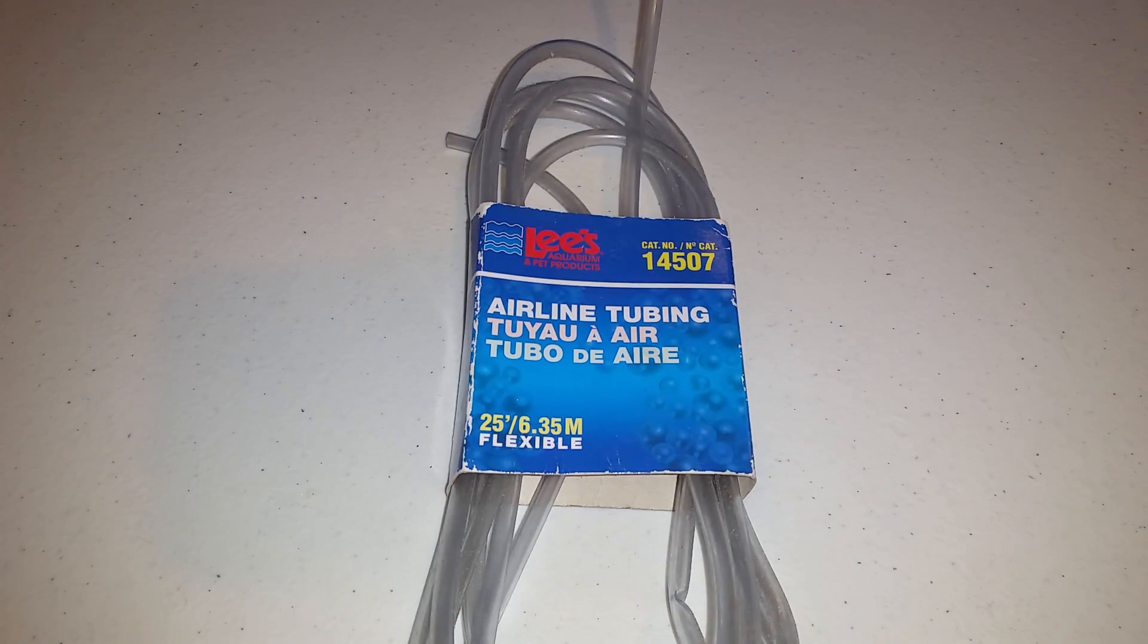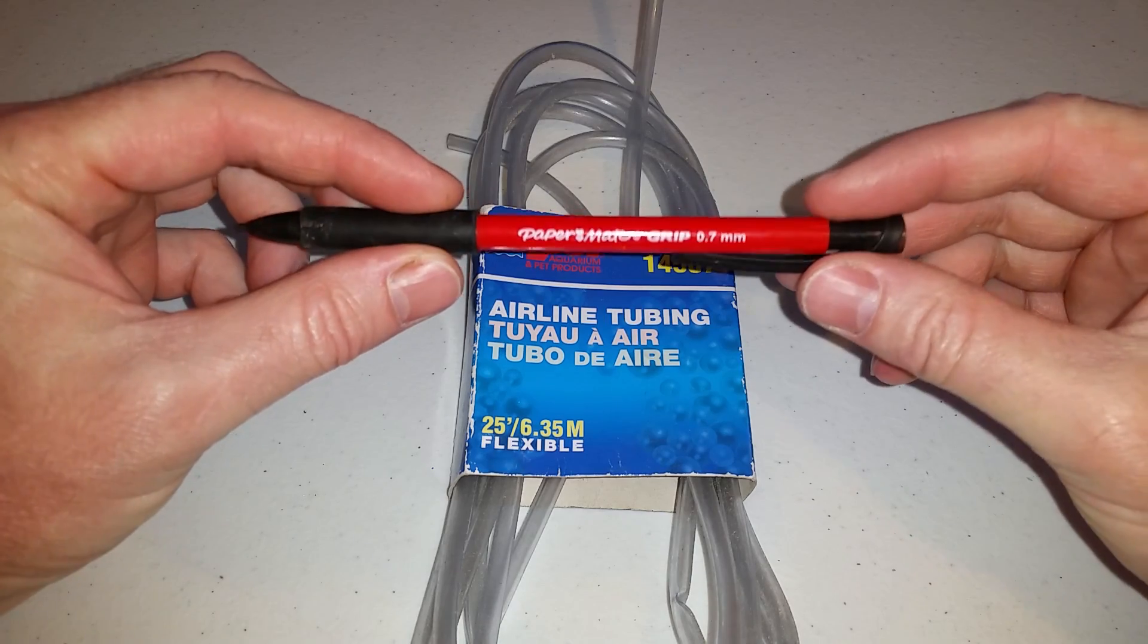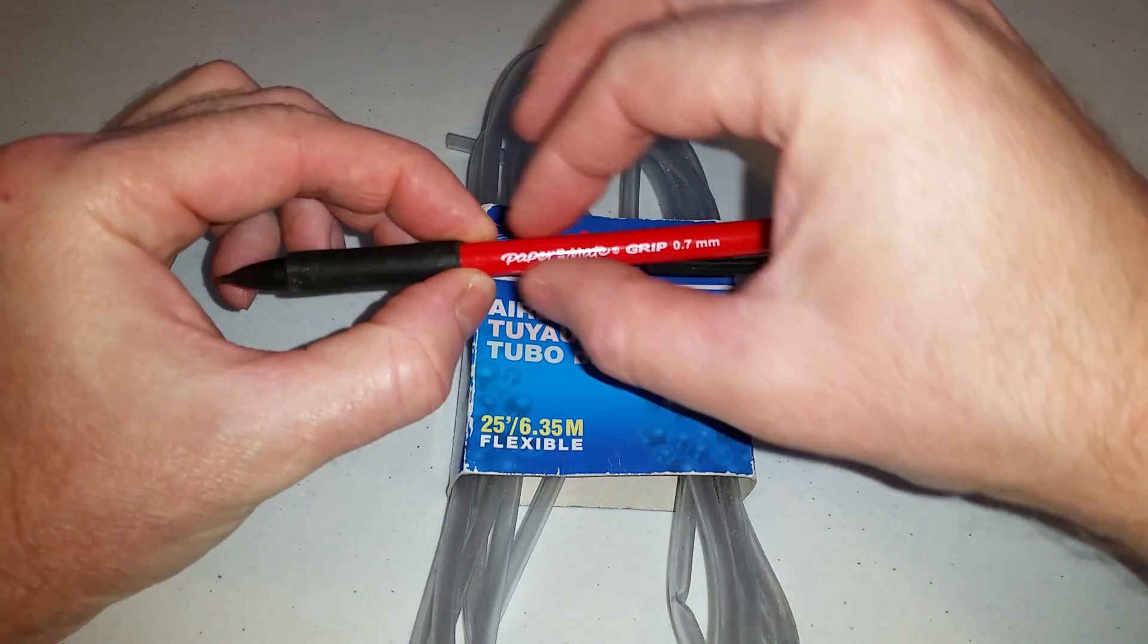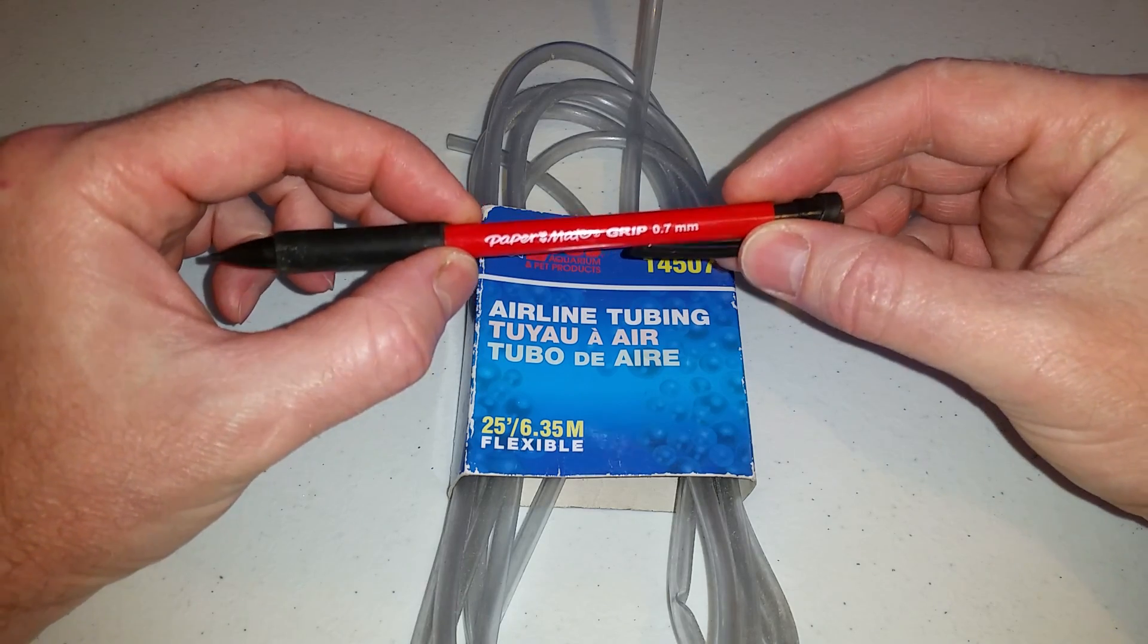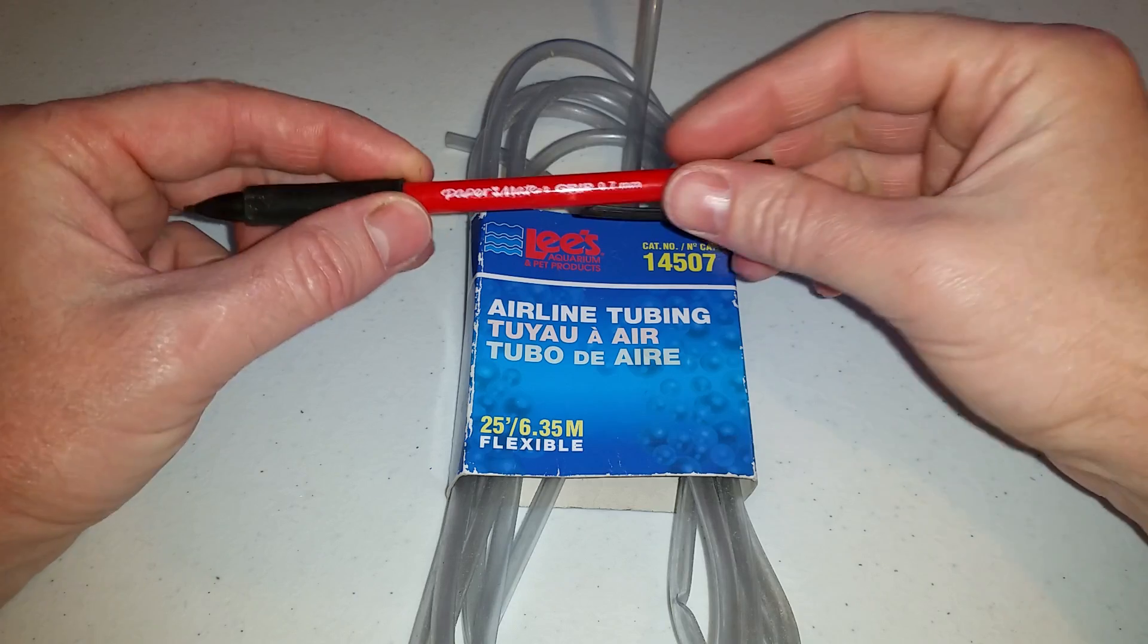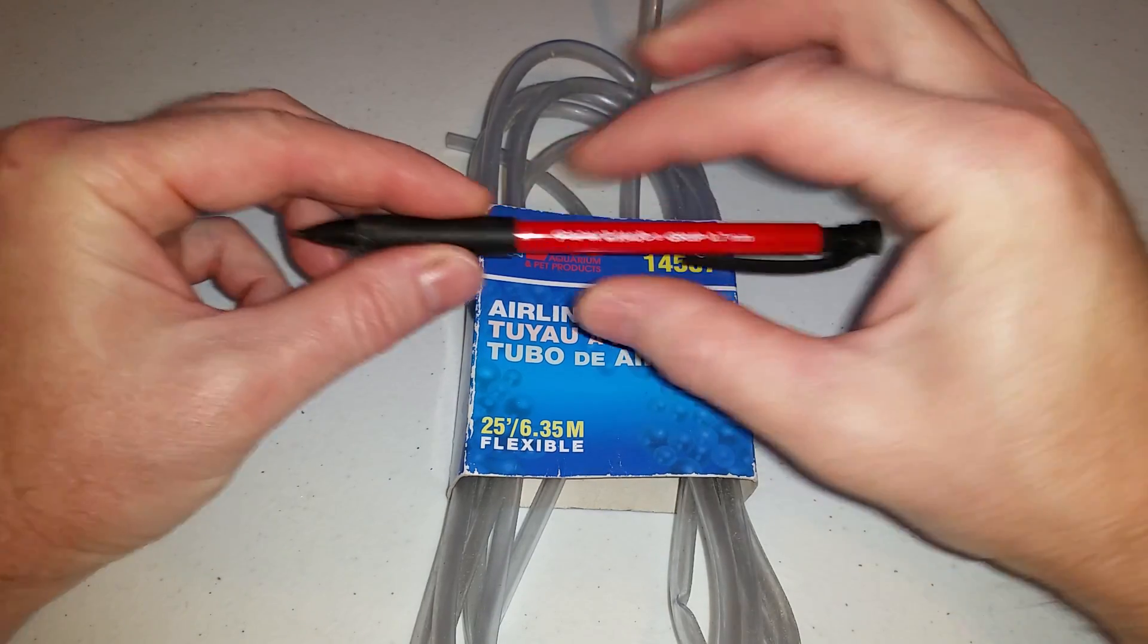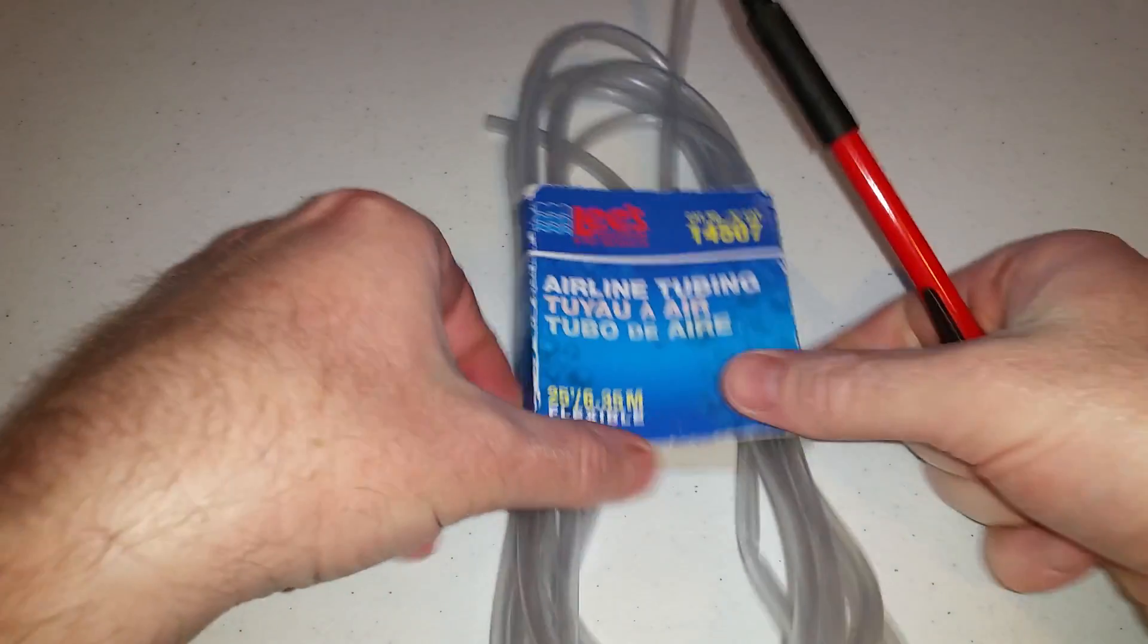The items you'll need is some fish tank airline tubing or maybe an old pencil or pen with plastic tubing that you can cut. An old Bic pen that you can get from the dollar store like 10 for a dollar. You can take the center ink well out and cut it in half and use that. Or an old soda straw.